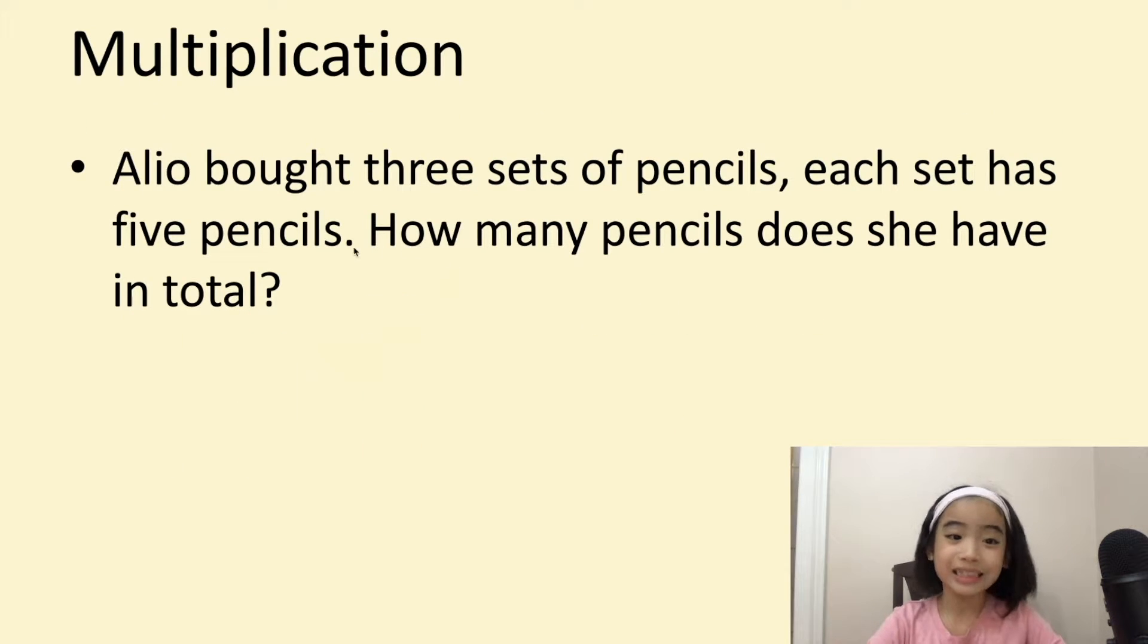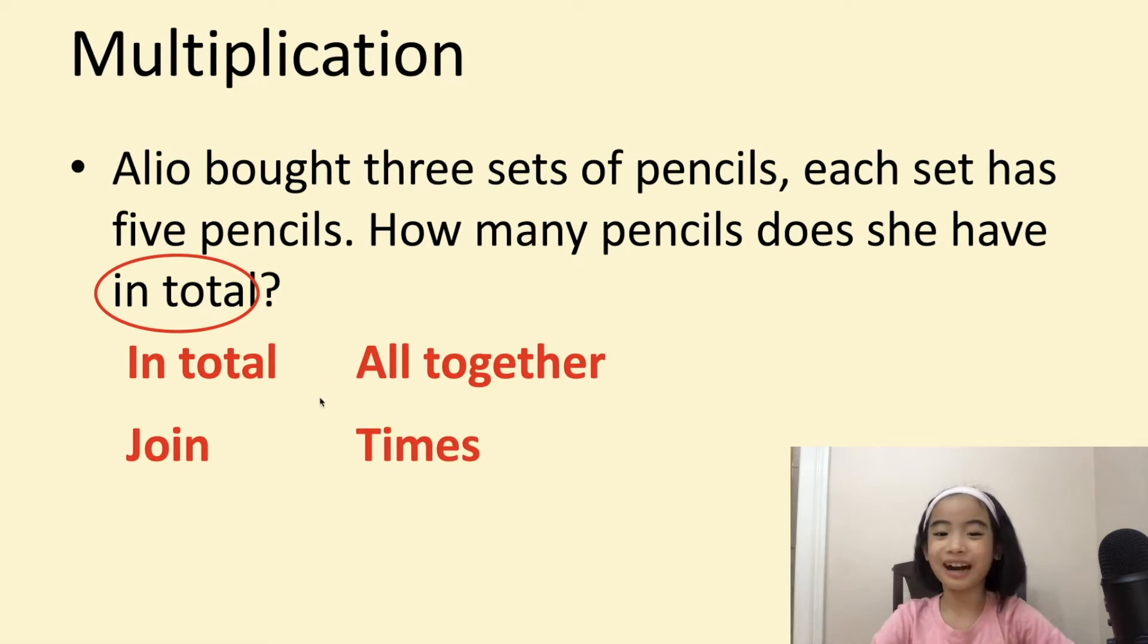In this word problem, there is one keyword. The keyword is 'in total.' There are other keywords like 'altogether,' 'join,' and 'times.' Don't they look similar to the addition keywords? Yeah, they do. So, when you see these keywords, you may use multiplication to figure out the word problem.